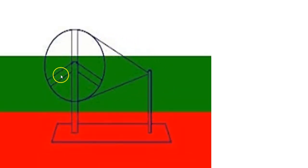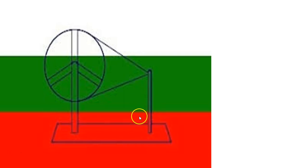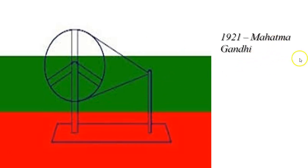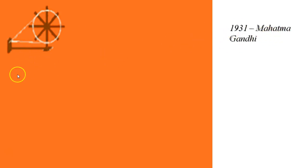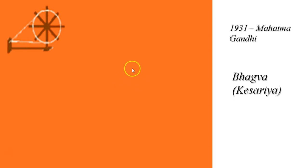Now let's talk about our fourth flag. This flag was introduced in 1921. Gandhi had taken the same initiative for it, but it was only one color, which was called the Bhagwa color or the Kesariya color, which was shown on the top.